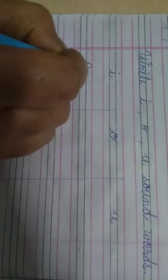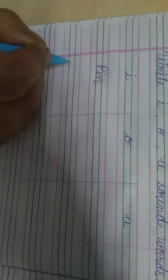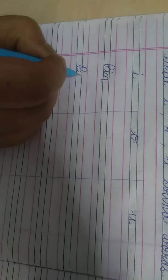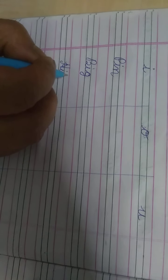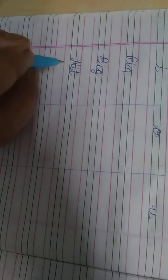P-I-N. Pin. B-I-G. Big. Okay? H-I-T. Hit. ऐसे करके आपको 5-5 लिखना है.